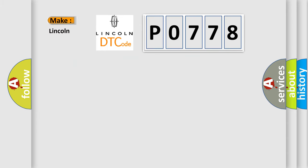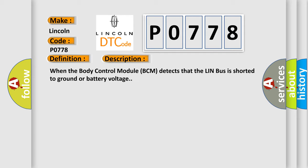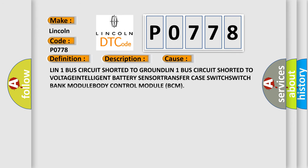What does the diagnostic trouble code P0778 interpret specifically? The basic definition is LIN-1 bus. This is a short description of this DTC code: when the body control module (BCM) detects that the LIN bus is shorted to ground or battery voltage, this diagnostic error occurs.